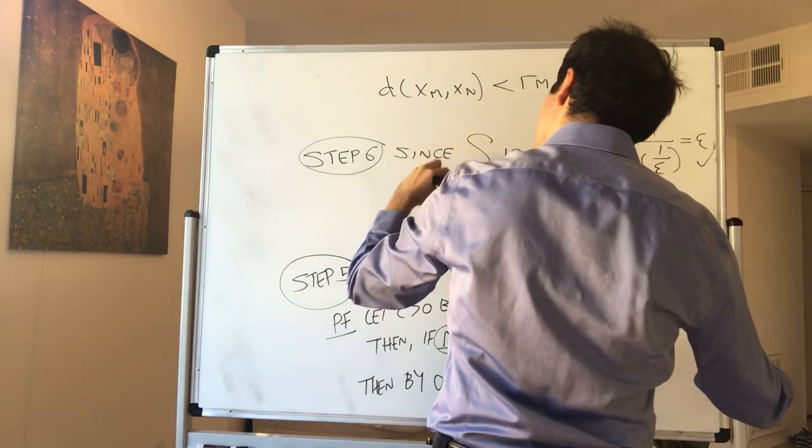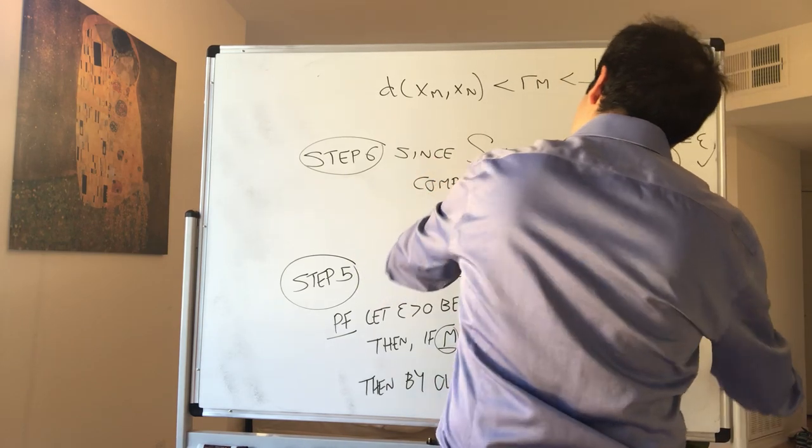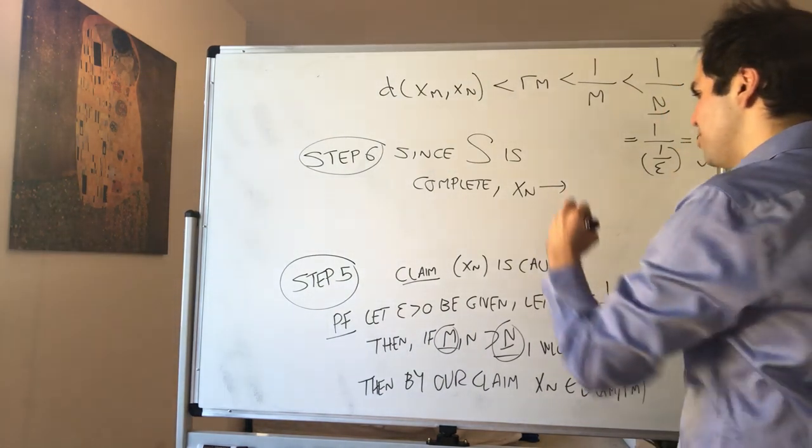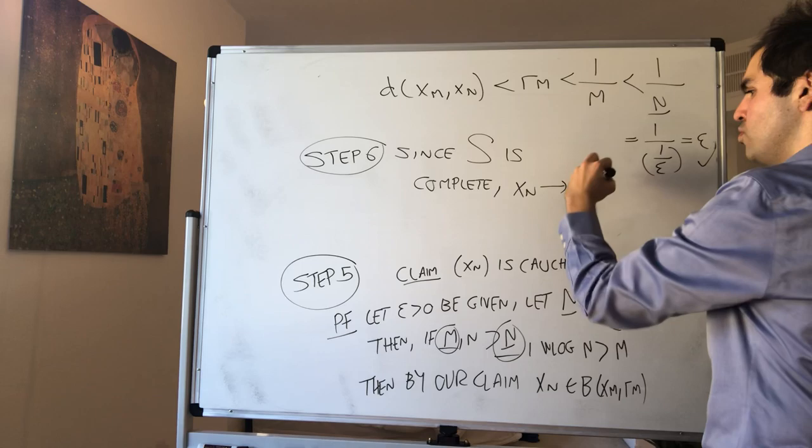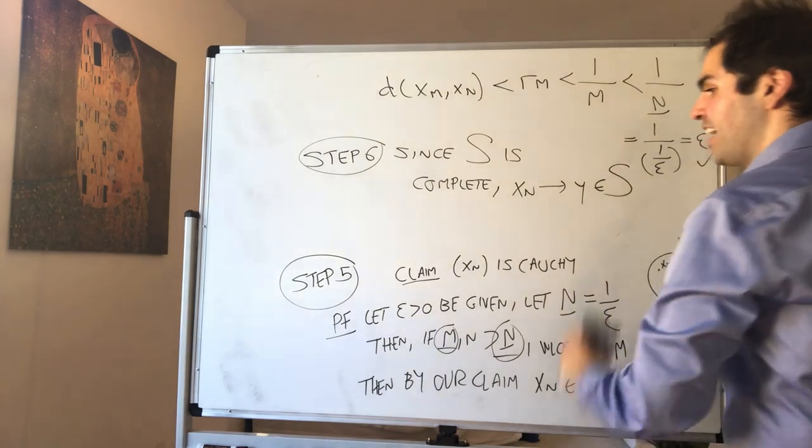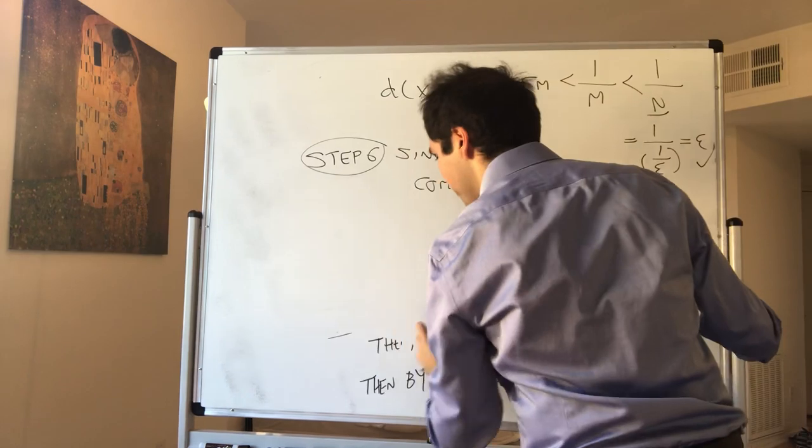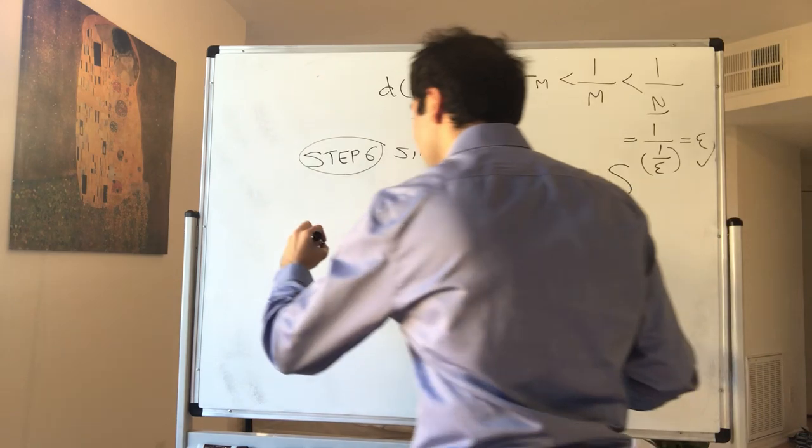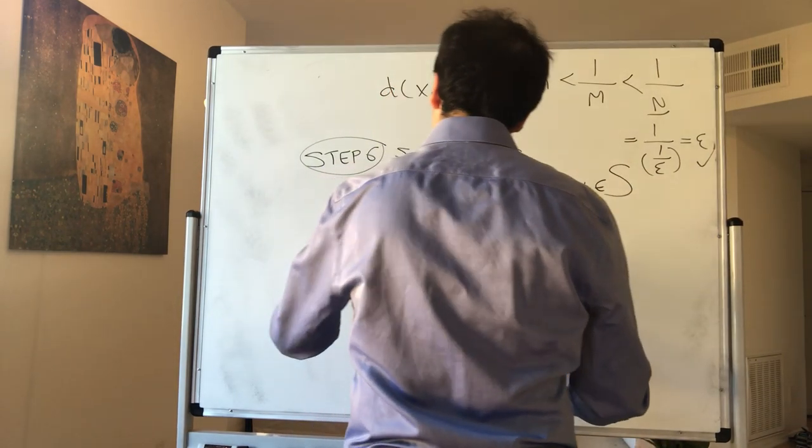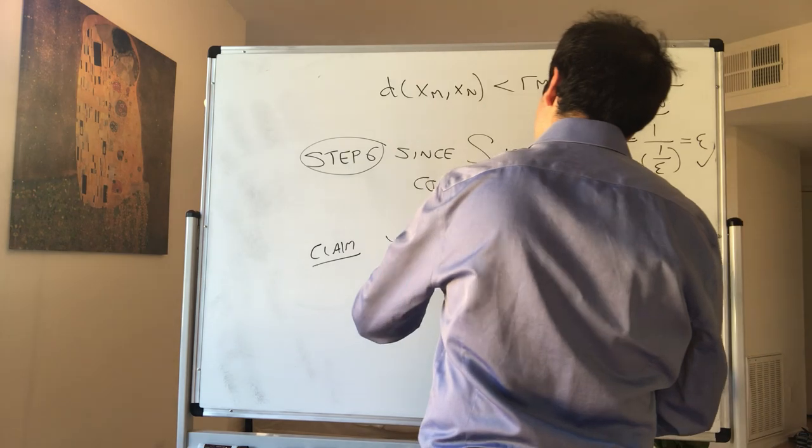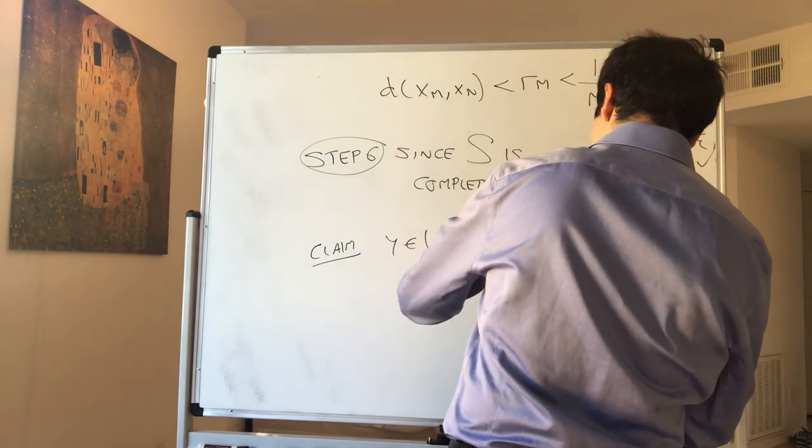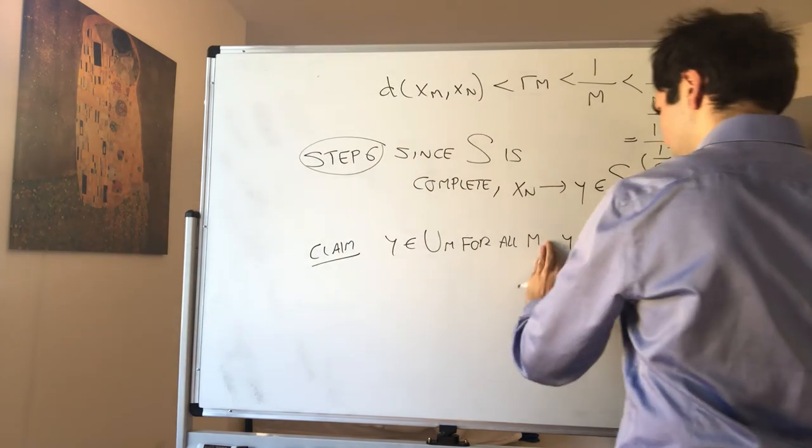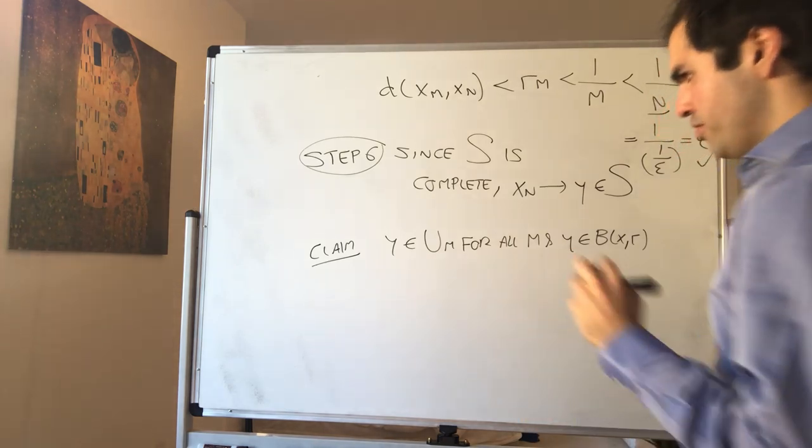I want to write converges to x, but we already used x in the beginning, so it converges to some y in S. And I'm claiming that this y solves our problem. And we need to show two things. So claim: y is in um for all m, and y is in B(x,r). Okay, so how do we show this?